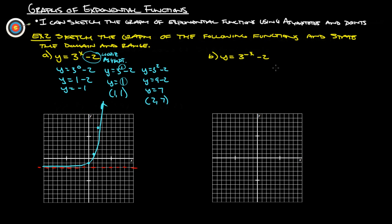Now let's try y equals three to the negative x minus two. Our asymptote is still at negative two, so we still have this horizontal asymptote at negative two. When we plug zero in for x, we get y equals three to the negative zero minus two. Three to the negative zero is the same as three to the positive zero, which is one minus two, so y equals negative one.